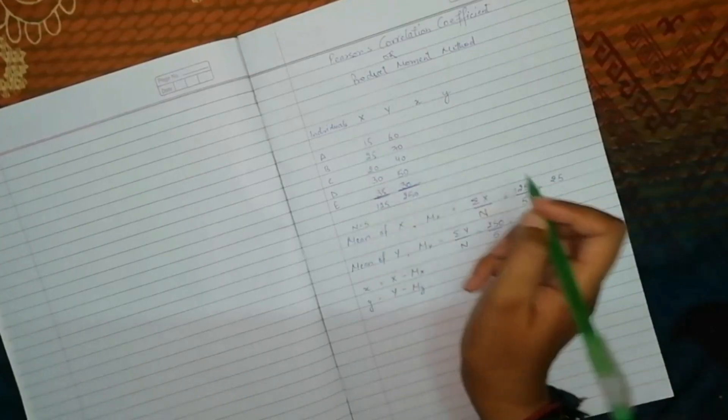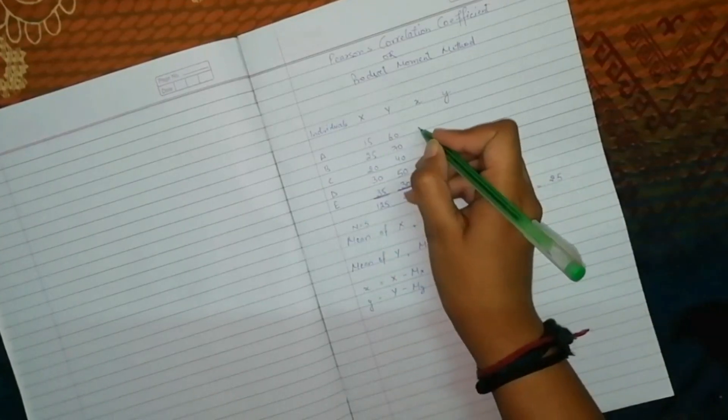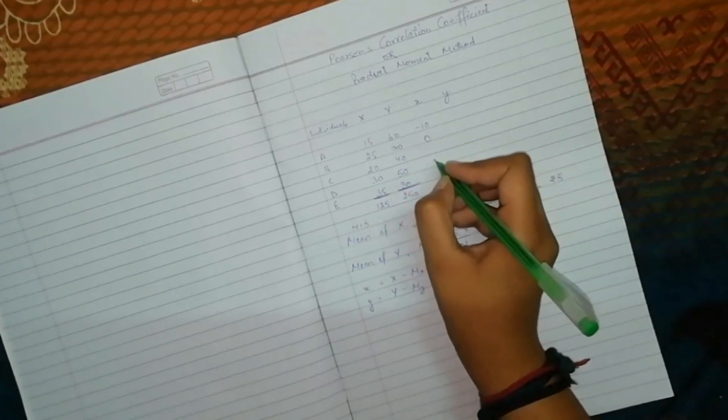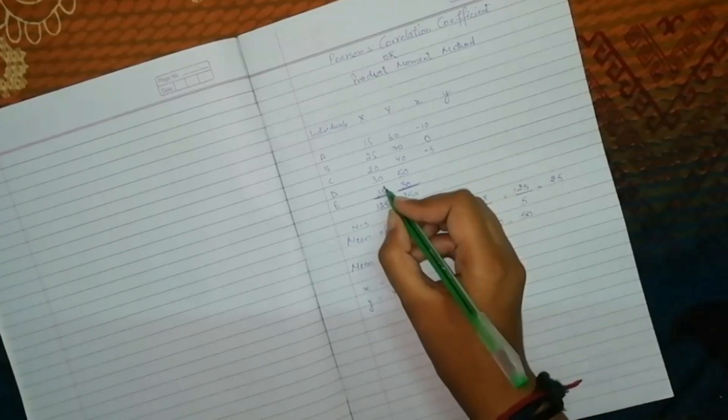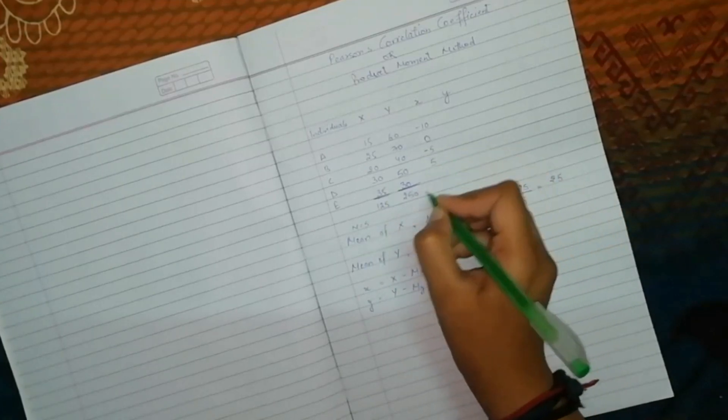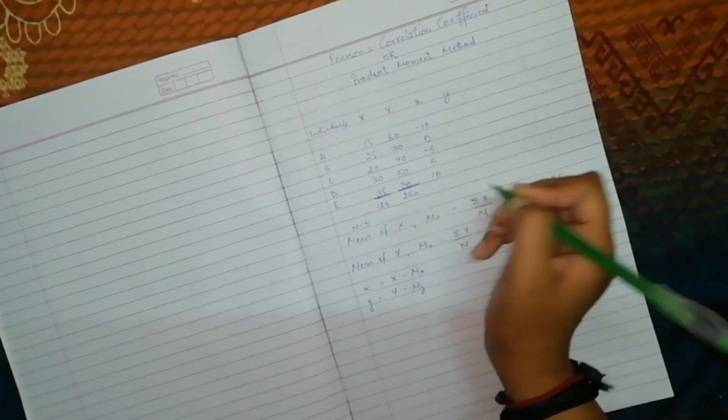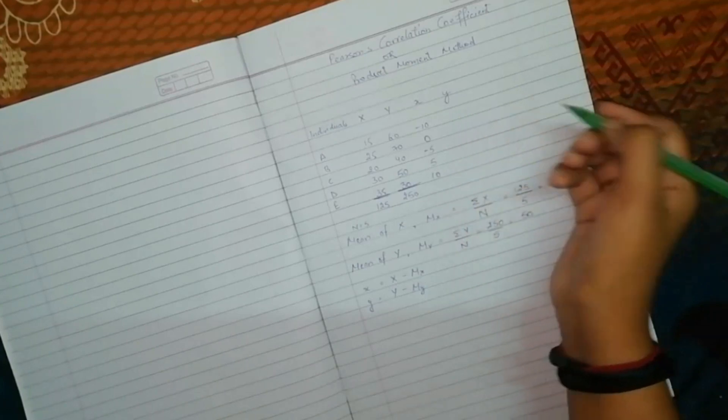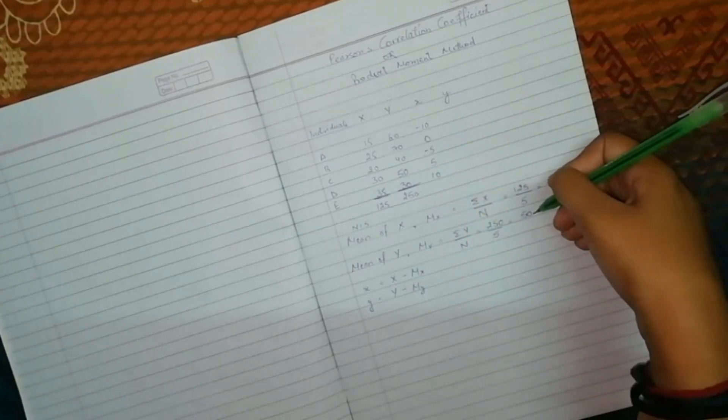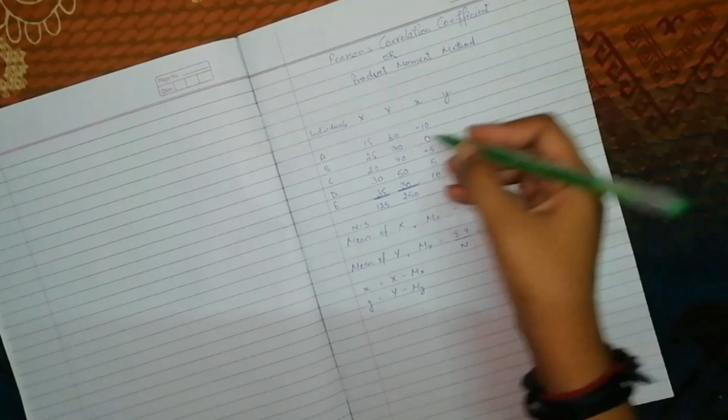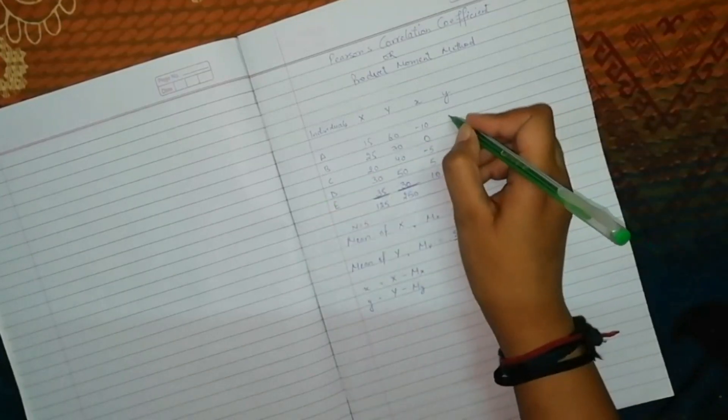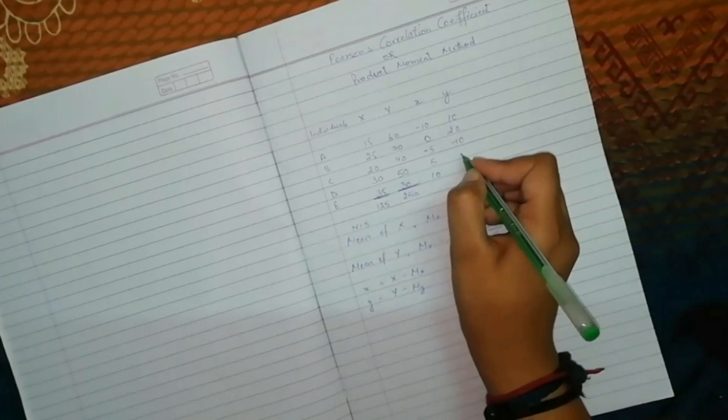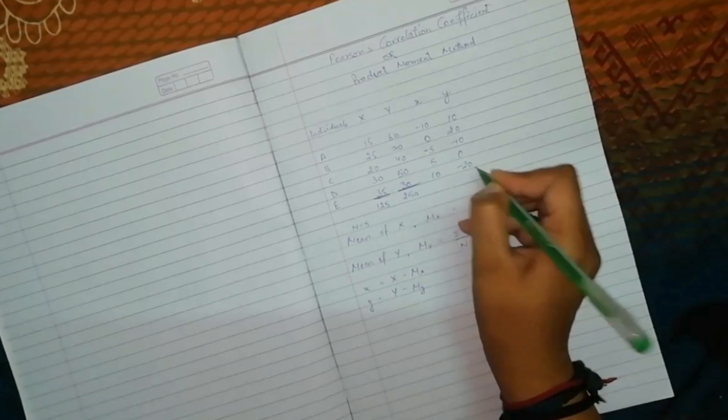So, 15 minus 25 is minus 10. Then, 25 minus 25 is 0. 20 minus 25 is minus 5. 30 minus 25 is 5. 35 minus 25 is 10. Then, I say Y is 50. Oh, sorry. Mean of Y is 50. Then, 60 minus 50 will be 10. Then, you have 20. You have minus 10. 50 minus 50 is 0. And, 30 minus 50 is minus 20.